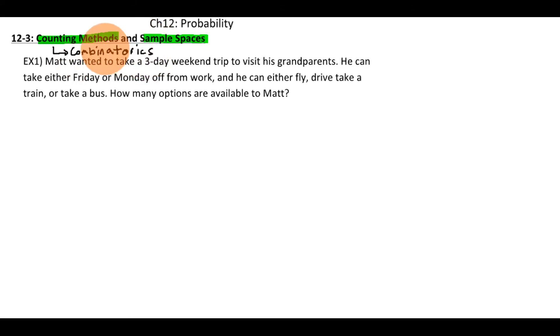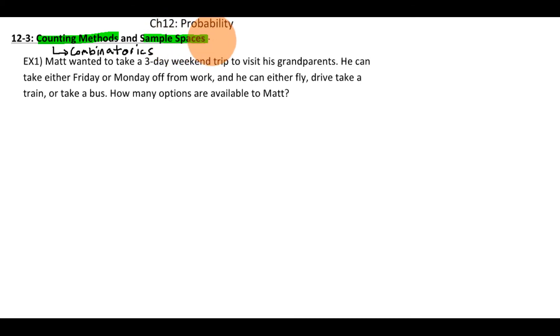If you're interested in it, go and take a look. But let's move on to what sample spaces are. When we're dealing with probability, sample spaces help us find out the values, or they help us find that probability. A sample space, when you run an experiment, is pretty much all of the possible outcomes — so all of the outcomes.